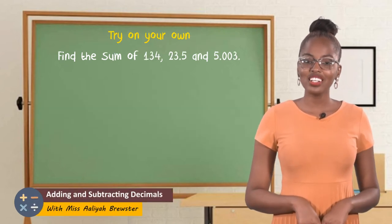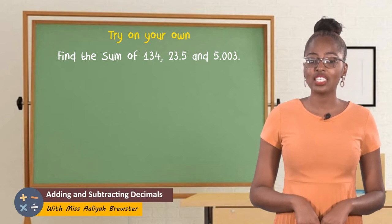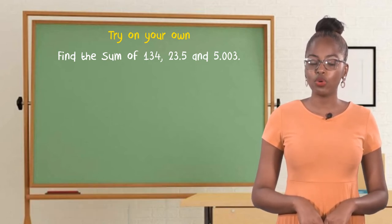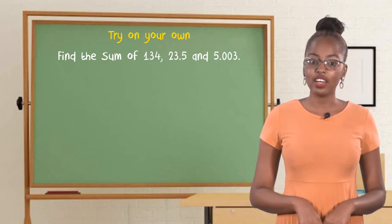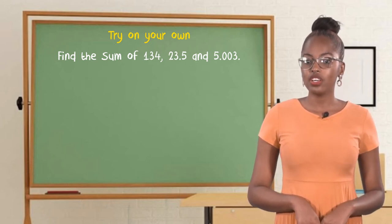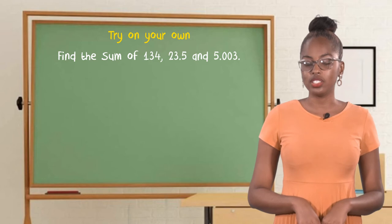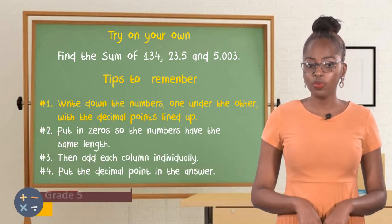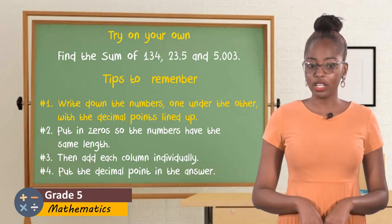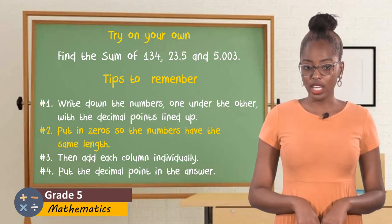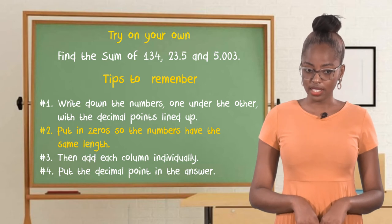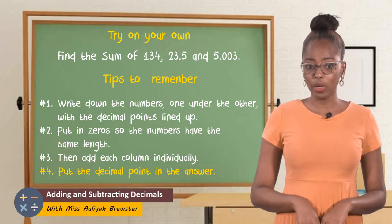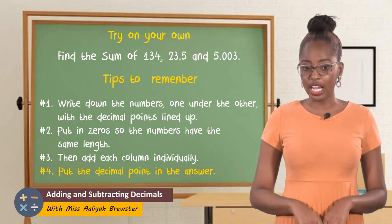Now it's time for you to try an activity on your own. Find the sum of one hundred and thirty-four, twenty-three and five-tenths, and five and three-thousandths. Remember: write down the numbers one under the other with the decimal points lined up. Put zeros in so the numbers have the same length. Then add each column individually, and remember to include the decimal point in your answer.